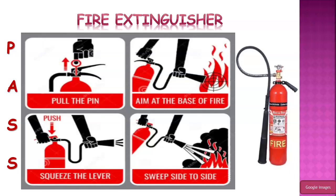Now let's look at the fire extinguisher and how to use it, using the short form PASS. P stands for Pull the pin at the top of the fire extinguisher. A stands for Aim at the base of the fire. S stands for Squeeze or push the lever at the top, so that carbon dioxide comes out. And the final S stands for Sweep the fire extinguisher side to side along the fire. That is the way to use a fire extinguisher.